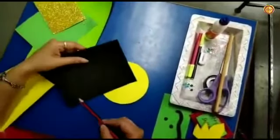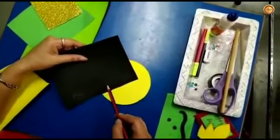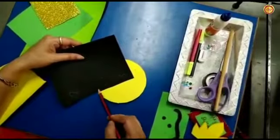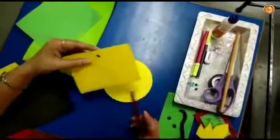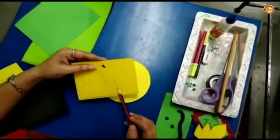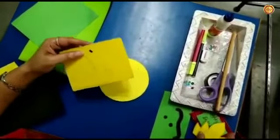Then draw small eyes and mustache of Ravan on black paper sheet and cut it. Draw a crown shape on yellow glitter sheet and cut it.